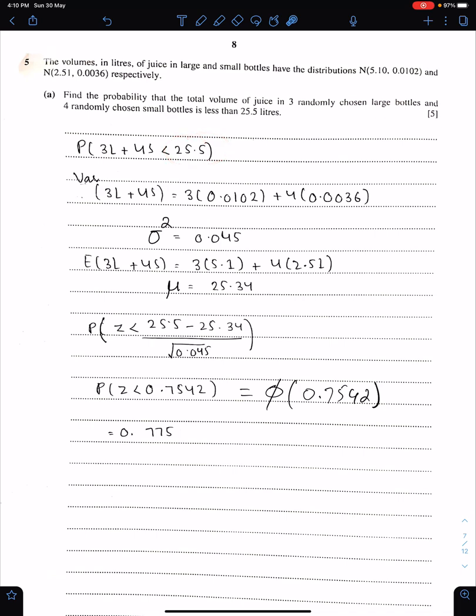This is the value of mu. We need this probability, 25.5. So 25.5 minus mu over under root sigma square. We need this probability. This is phi, because we need larger area. And this is the answer up to three significant figures.